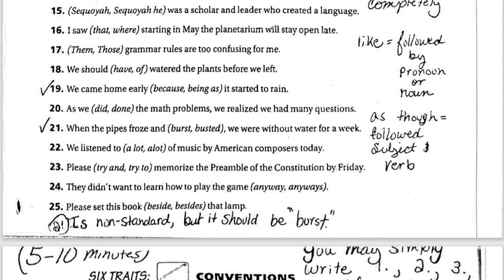Number 21 is written really sloppy here and got cut off — I had to rewrite over the cut-off part. It says that 21 is non-standard but should be burst. That tells you both are acceptable, but one is more acceptable. So on a test question, you'd select the best response, which would be burst. I've also checked number 19: we came home early because it started to rain. Without a resource, you wouldn't know that the phrase being as is somewhat non-standard.